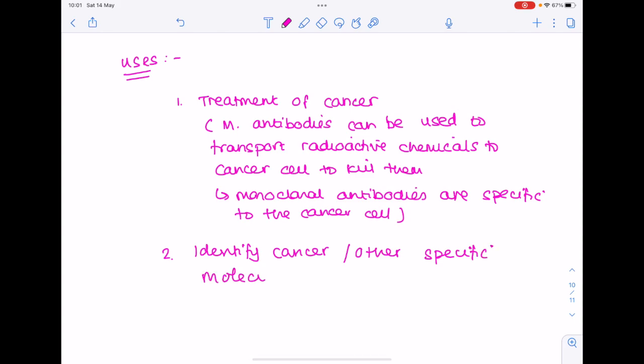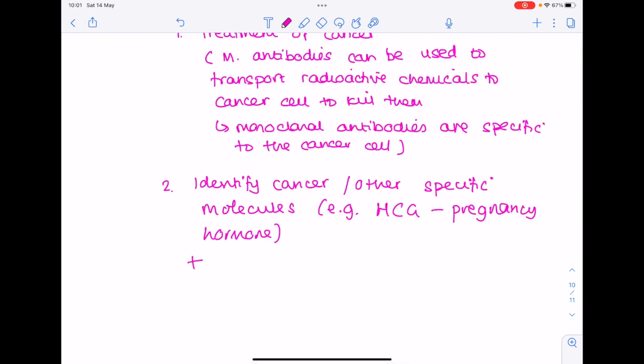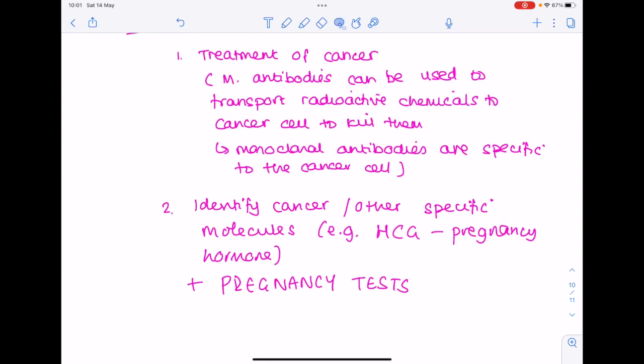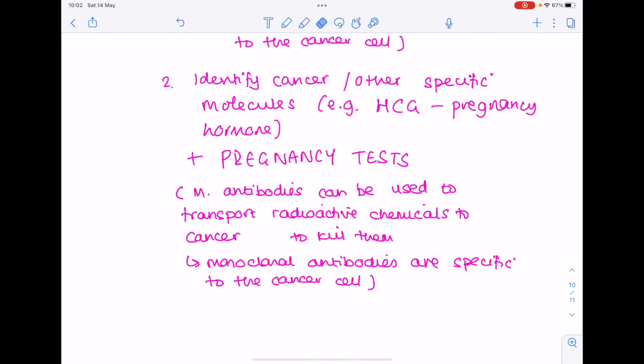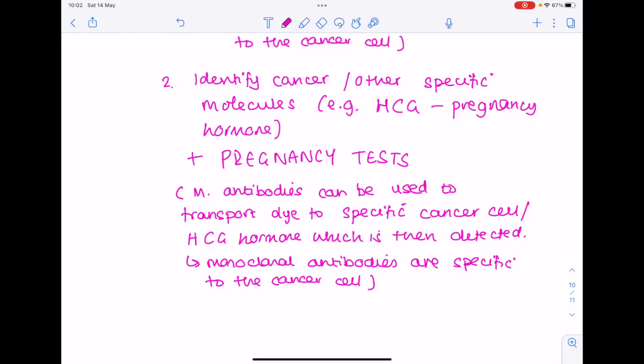And what do those other specific molecules include? Well so many different things. What about HCG, which is a pregnancy hormone? So if you really want to talk about what it can be used for, it can be used in pregnancy tests, these monoclonal antibodies. And how is it used? Well, the monoclonal antibodies can be used to transport dye to the specific cancer cell or HCG hormone which is then detected. So the monoclonal antibodies are specific to the molecule.